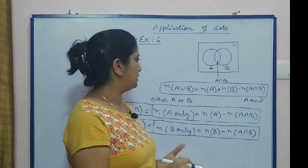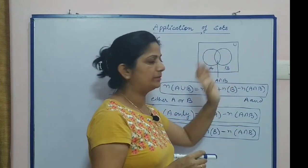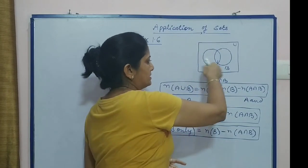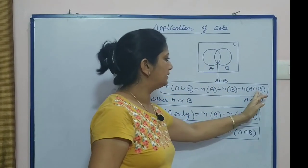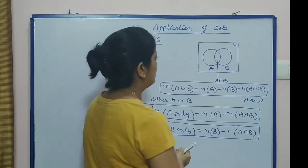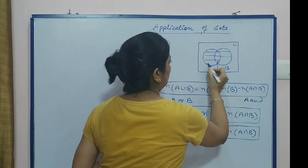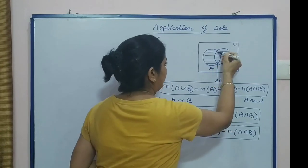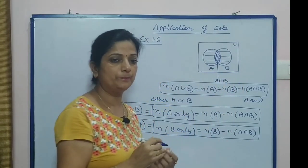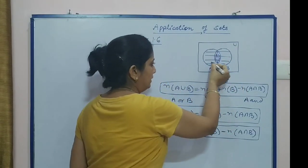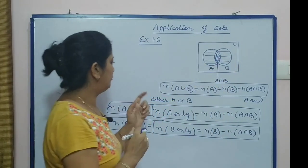We look at the relation between set A and set B. There is a universal set containing set A and set B. This complete portion shows A union B, this small portion shows A intersection B, this complete term is set A, and this complete term is set B.